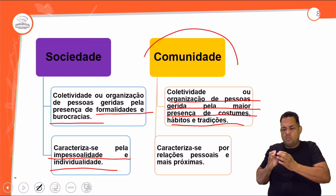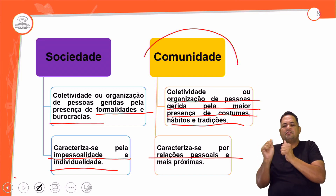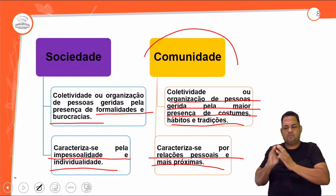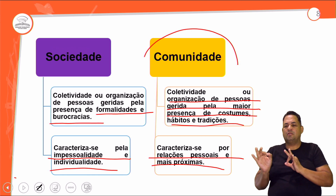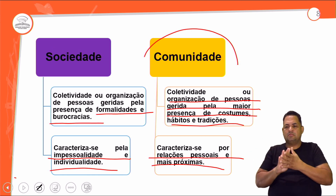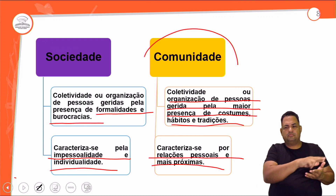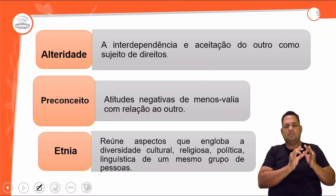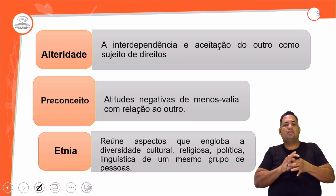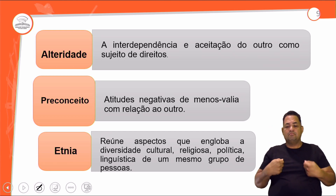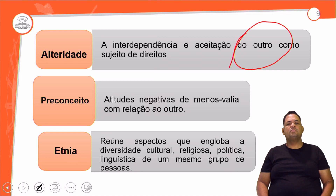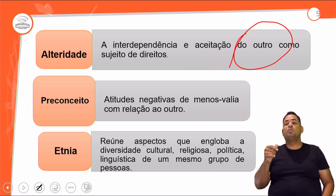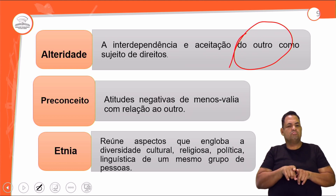Como é um grupo menor, as pessoas têm mais proximidade na comunidade, caracterizando-se por relações pessoais mais próximas e afetivas. Na sociedade existe uma diversidade enorme de cultura, gerida pelas formalidades e burocracias. A alteridade é a interdependência e a aceitação do outro como sujeito de direitos — é o reconhecimento de que eu dependo do outro para me reconhecer enquanto indivíduo, sem preconceito, reconhecendo esse outro como importante.